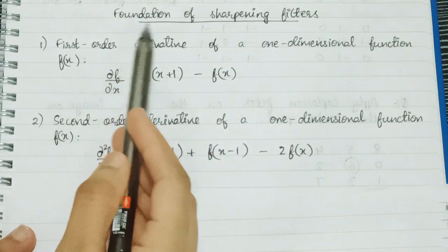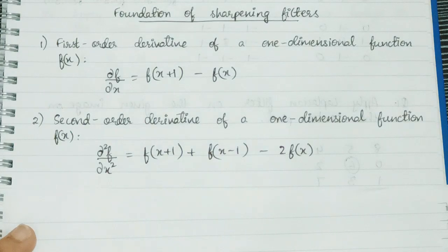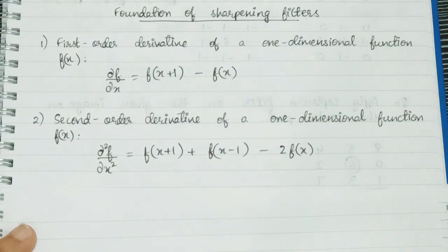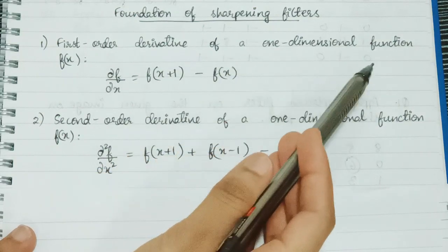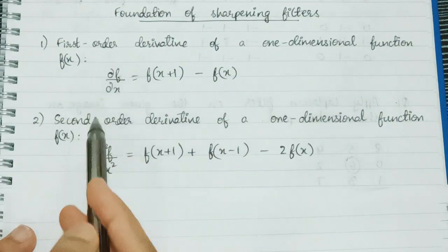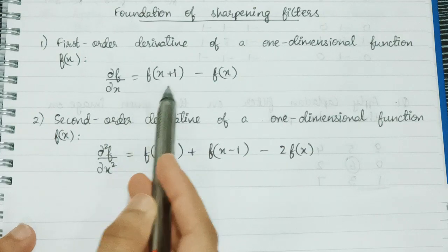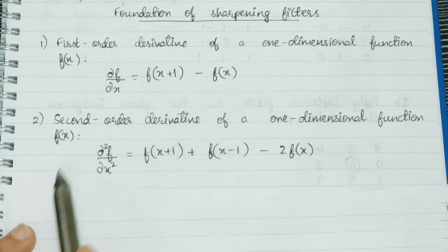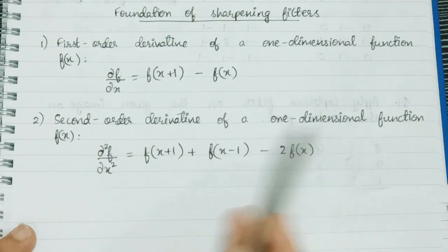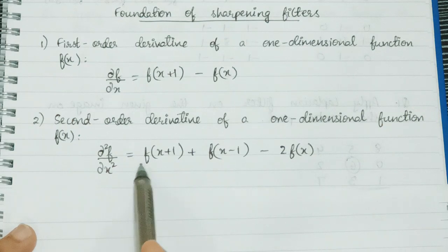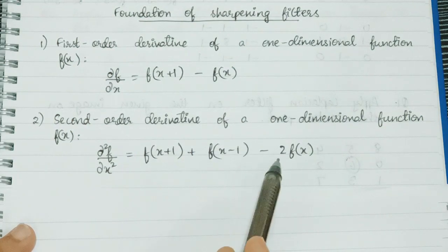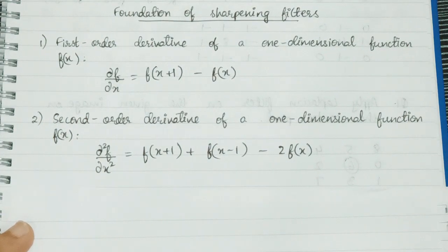Now for the foundation of sharpening filters, these formulas are important because they will be used to derive other important formulas. The first-order derivative of a one-dimensional function f(x) is: ∂f/∂x = f(x+1) − f(x). The second-order derivative is: ∂²f/∂x² = f(x+1) + f(x−1) − 2f(x). Please note these formulas as they are important.